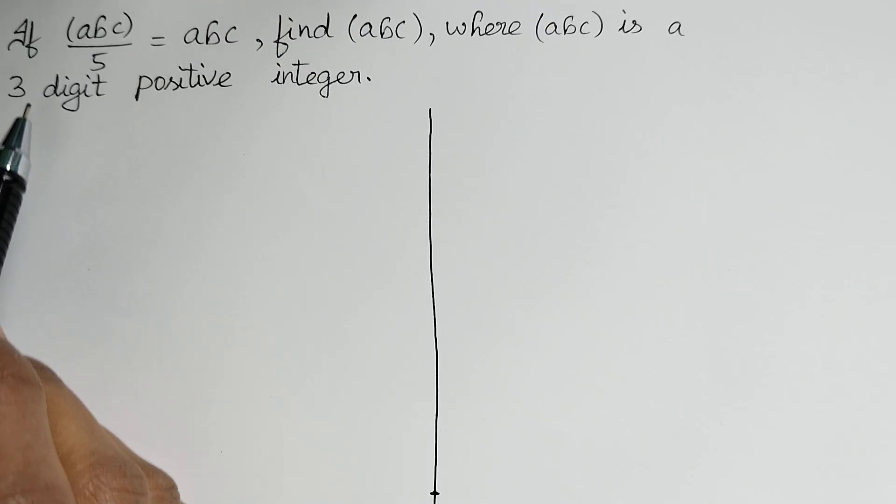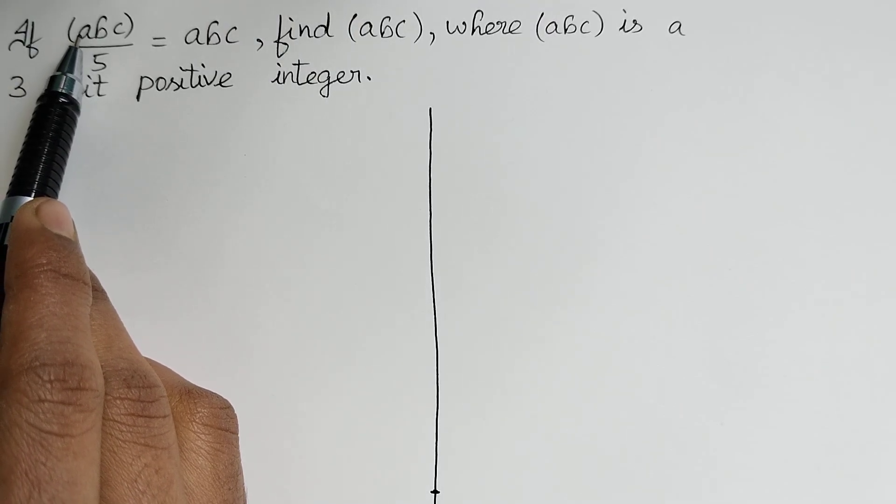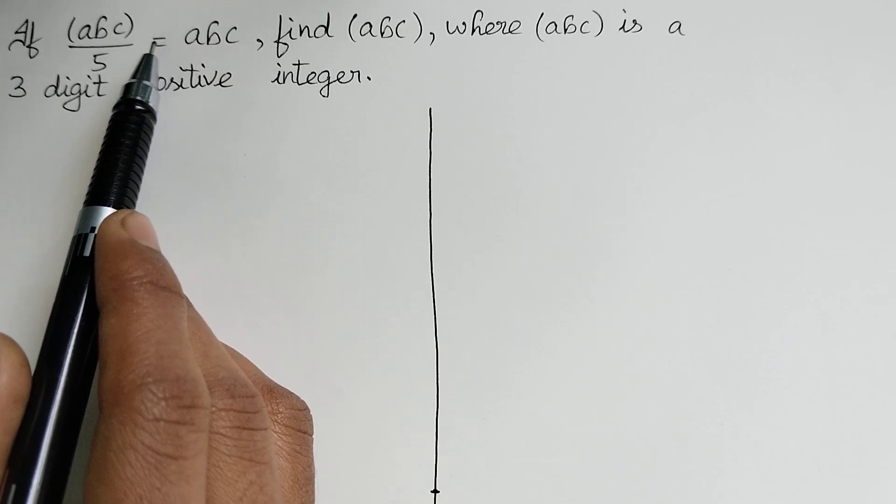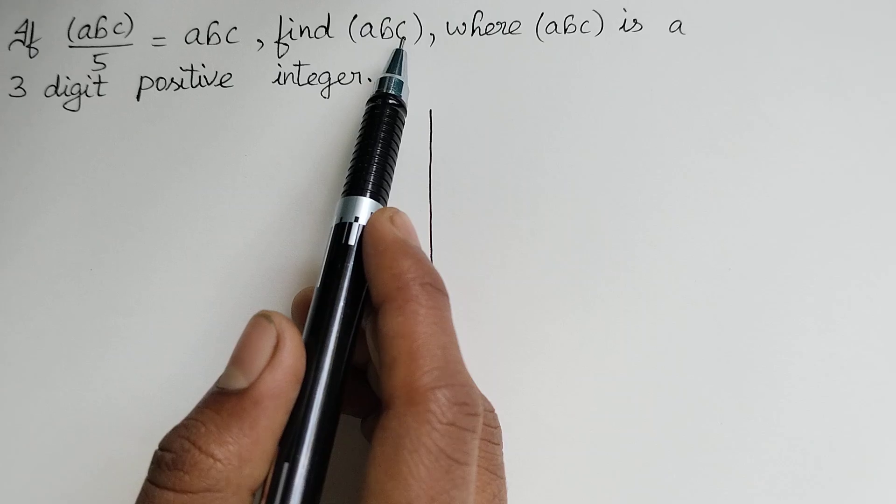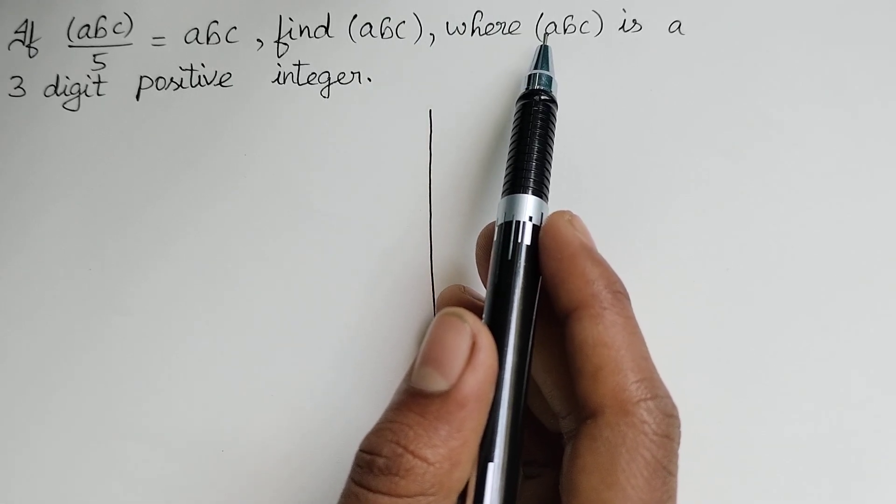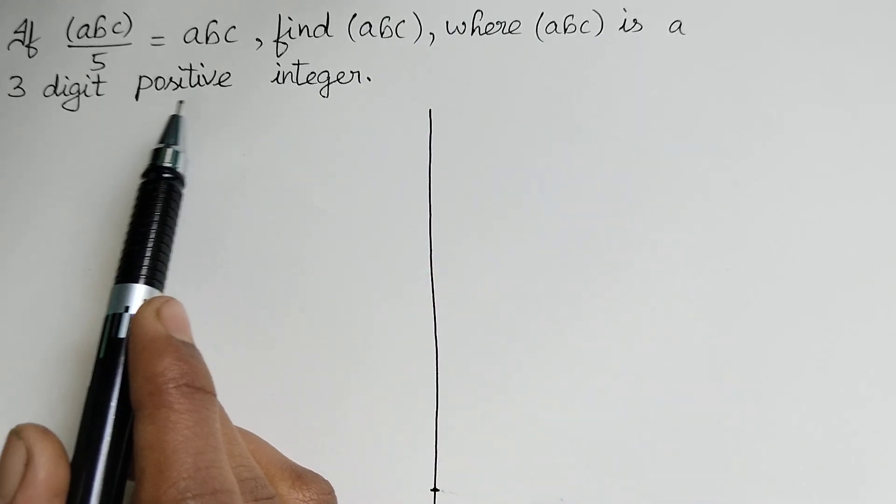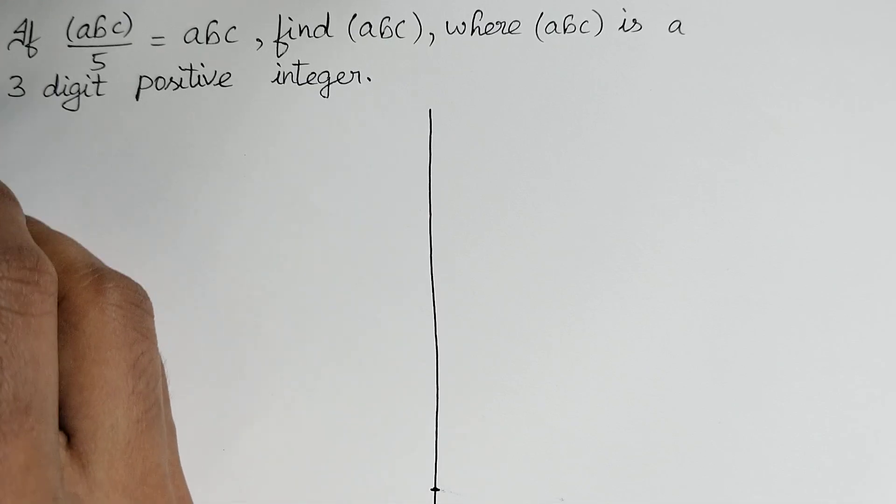The question is: if the term abc divided by 5 is equal to abc, find the term abc where abc is a 3-digit positive integer.